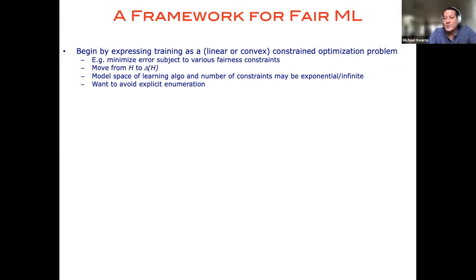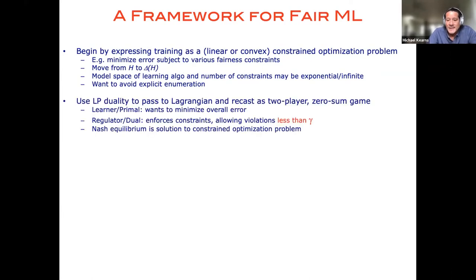We're actually going to essentially introduce a variable for the weight that we might put on absolutely any model in our model class and a weight for all of the possible fairness constraints that we might be concerned about. And in general, this means that the number of constraints and the number of models that we're entertaining might be exponentially large or even infinite. So obviously, from an algorithmic standpoint, we want to avoid explicit enumeration, but as I'll describe, there are very good tricks for doing that.